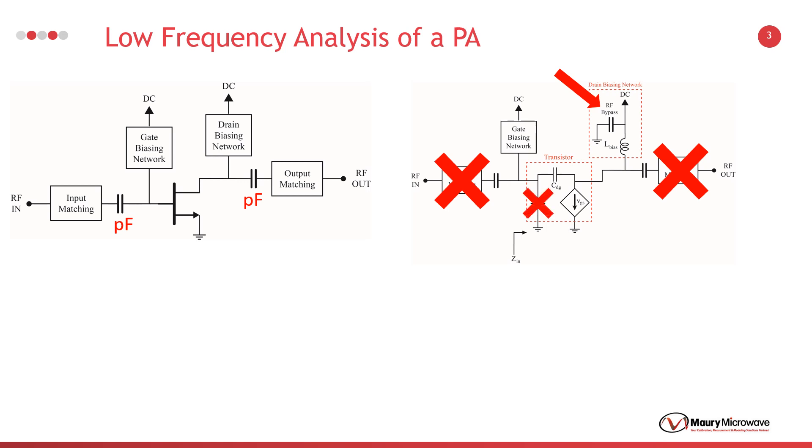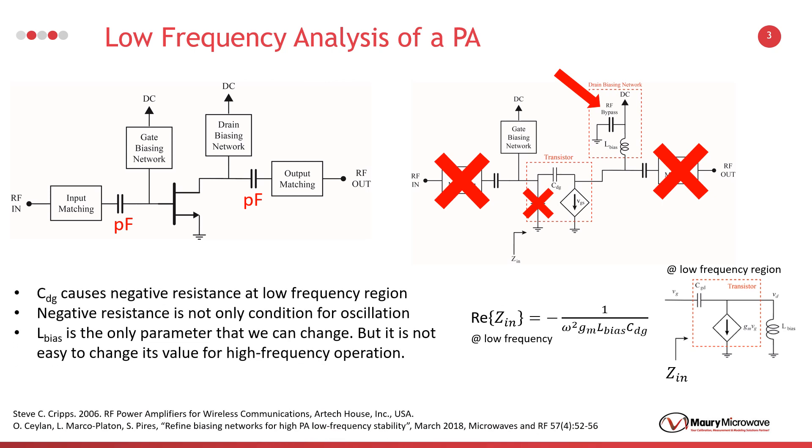Therefore, the amplifier circuit can be simplified to a basic network having drain gate capacitance, current source, and a biasing inductor. Again, recall that this is a simplification for low frequency operation. If we calculate the impedance seen from the transistor's gate and its real part is negative, then yes, this is correct as RF transistors have a negative impedance at low frequency regions. Please refer to the sources below for more information.